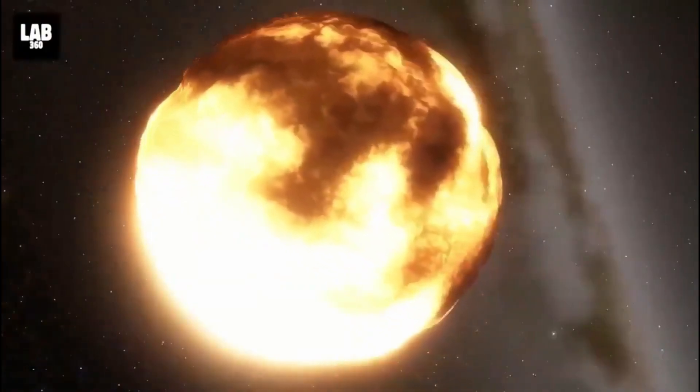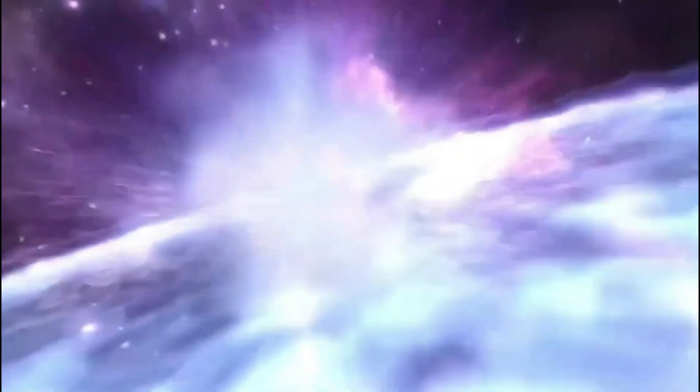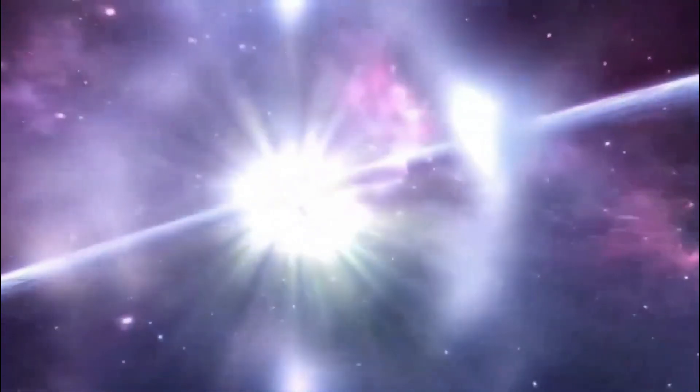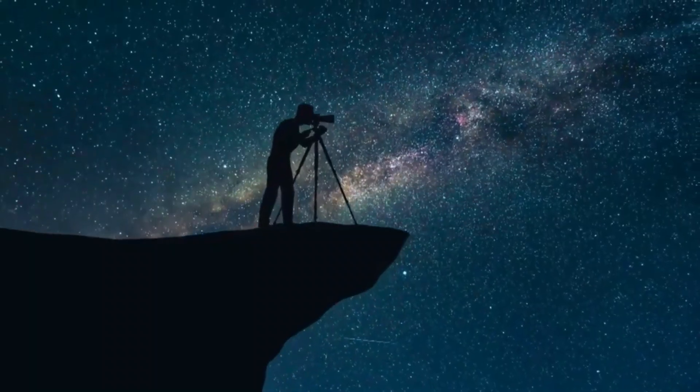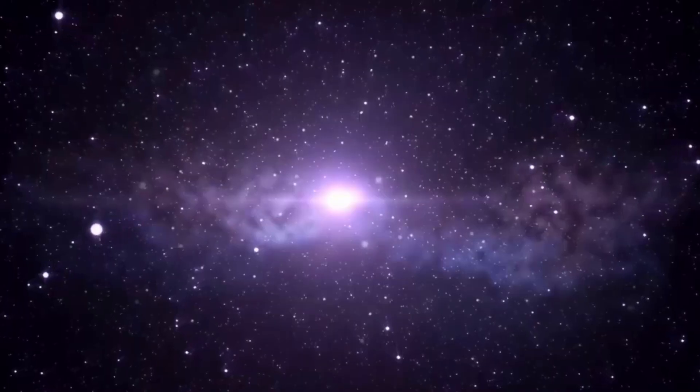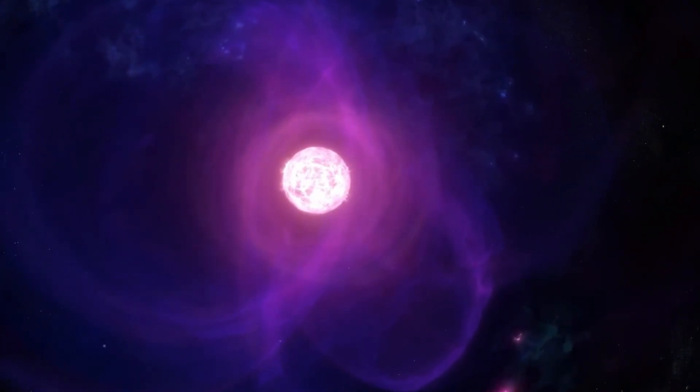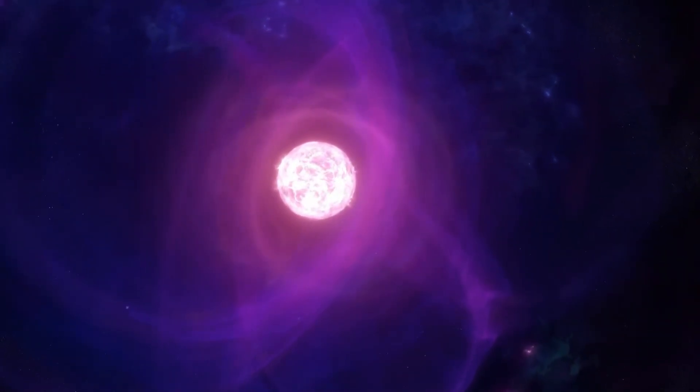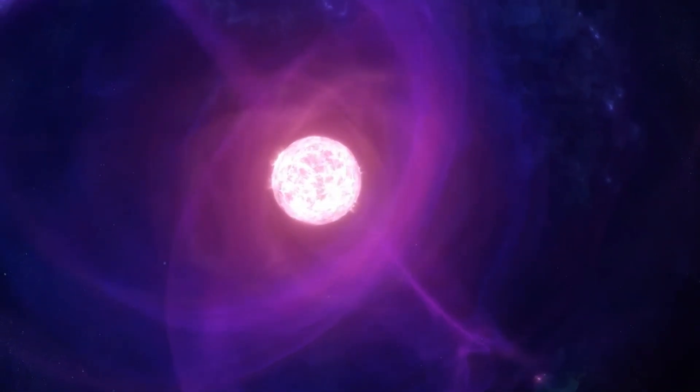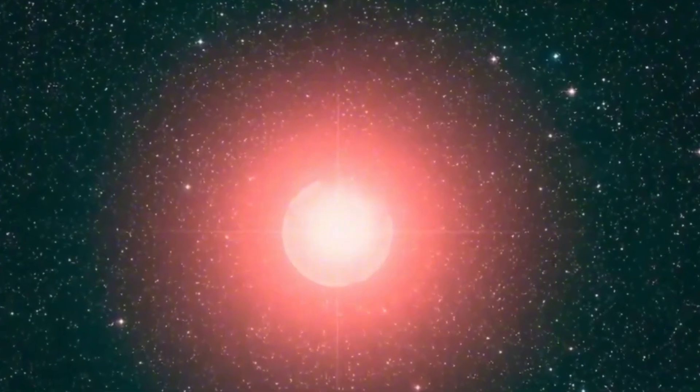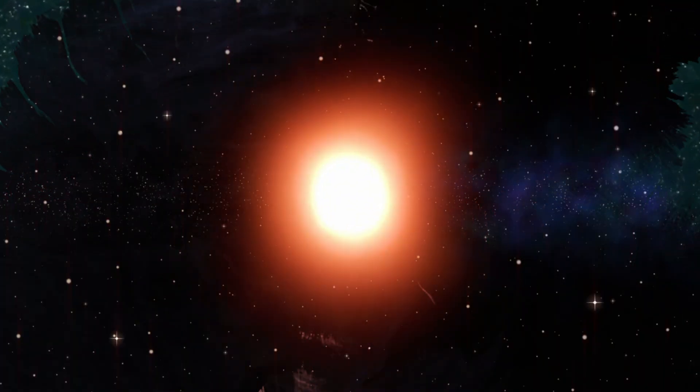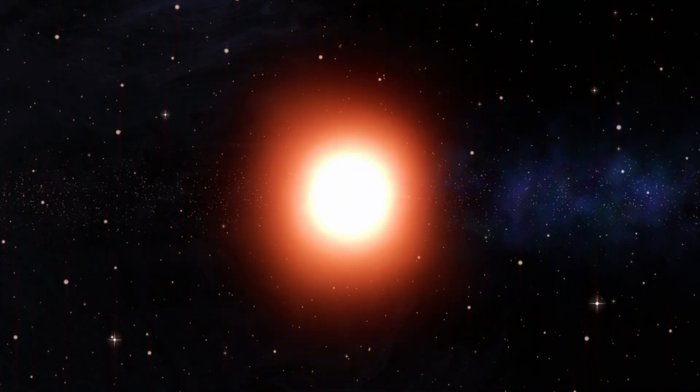It's not likely that Betelgeuse's supernova will hurt life on Earth directly, but it might have some effects on the atmosphere. A burst of ultraviolet radiation would be sent into the air by the blast. This could temporarily lower the ozone layer. Studies on the other hand show that the ozone depletion that would happen would be small and short-lived, causing only small environmental risks.